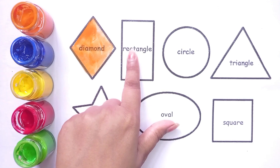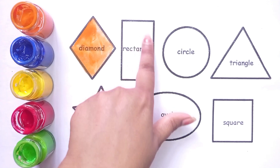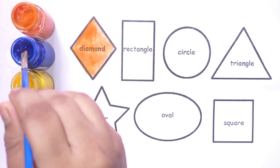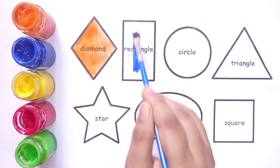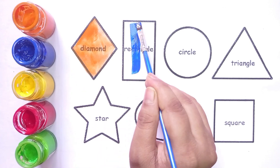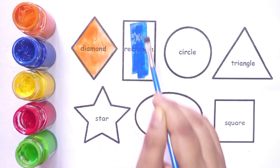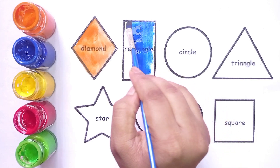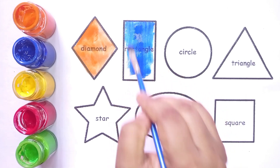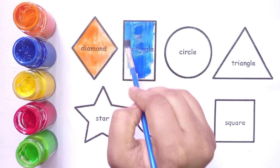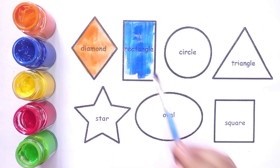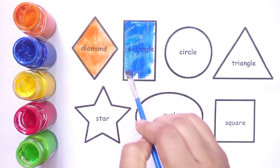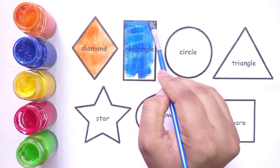Rectangle. This is rectangle shape. Blue color. This is blue color. Red color. Rectangle. This is rectangle shape.